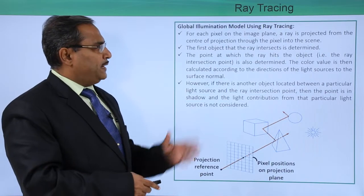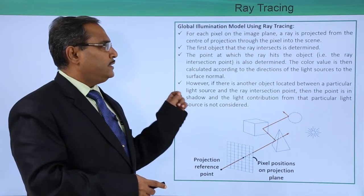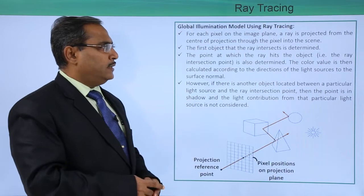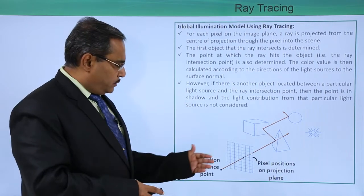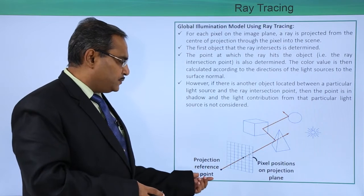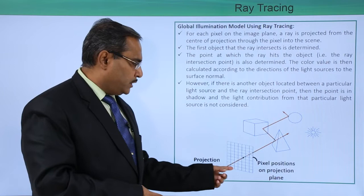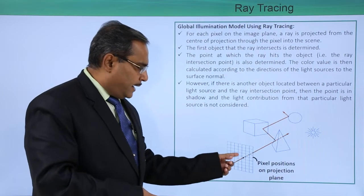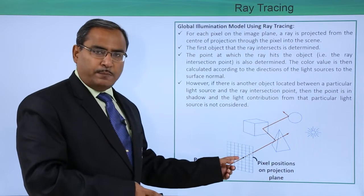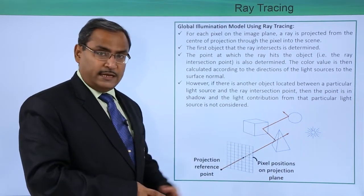For each pixel on the image plane, a ray is projected from the center of projection through the pixel into the scene. Here we have one projection reference point, a pixel position on the projection plane, and one ray passing through that pixel and falling on the scene.